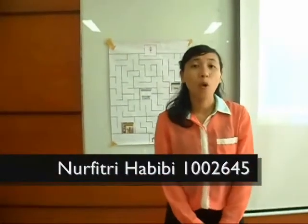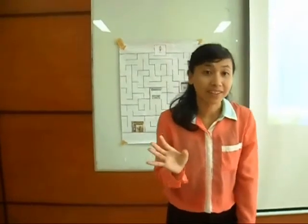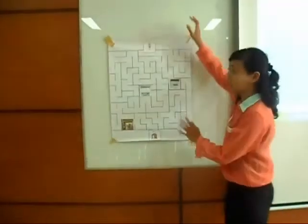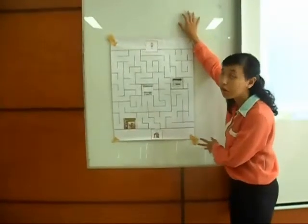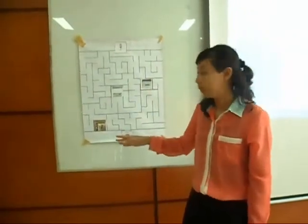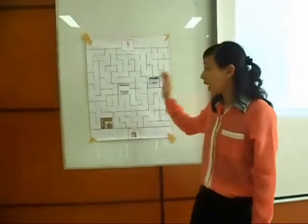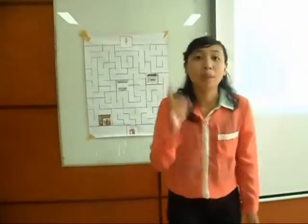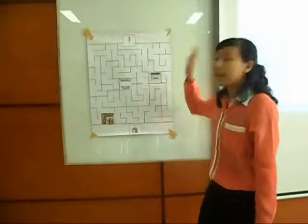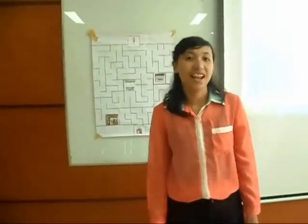Okay class, open your book to page three. Have you found it? Okay good. Can you see this picture in your book? Good. Tina wants to go to the grocery, bakery, and party shop, but she doesn't know the way. Your job is to find the way to the grocery, bakery, and party shop. Do you understand? Okay good, let's start.